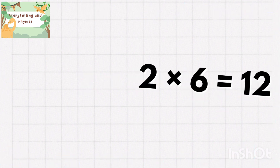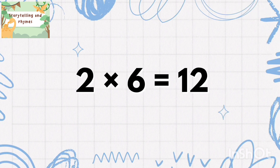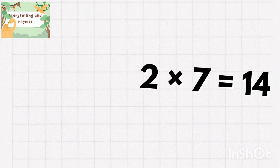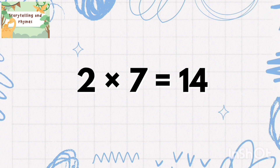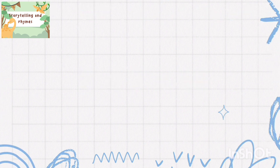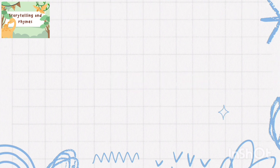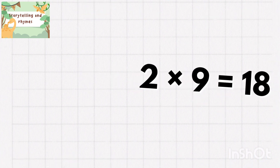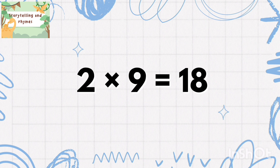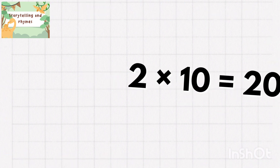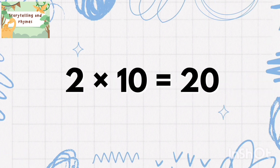2 six's are 12, 2 seven's are 14, 2 eight's are 16, 2 nine's are 18, 2 ten's are 20.